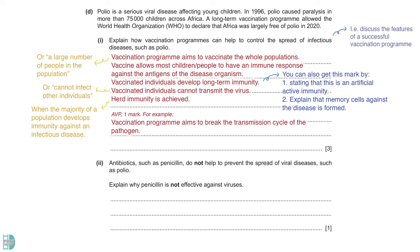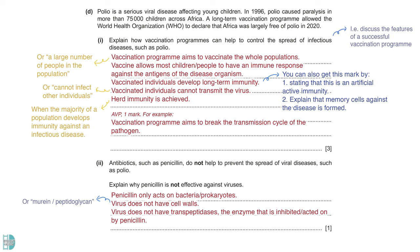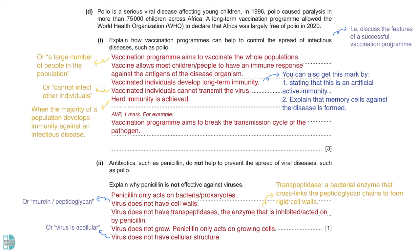Explain why penicillin is not effective against viruses. Penicillin only acts on bacteria or prokaryotes. Viruses do not have any target site or structure for antibiotics. For example, a virus does not have cell walls or murein or peptidoglycan. They do not have transpeptidases, the enzyme that is inhibited by penicillin. It is a bacterial enzyme that cross-links the peptidoglycan chains to form a rigid cell wall. Besides, viruses do not grow. Penicillin only acts on growing cells. Lastly, viruses do not have cellular structures. They are said to be acellular.